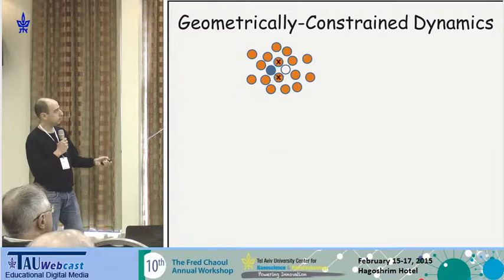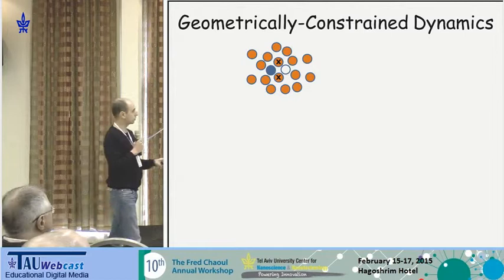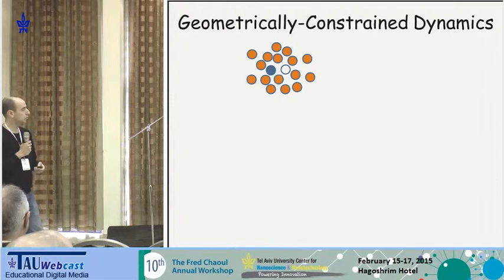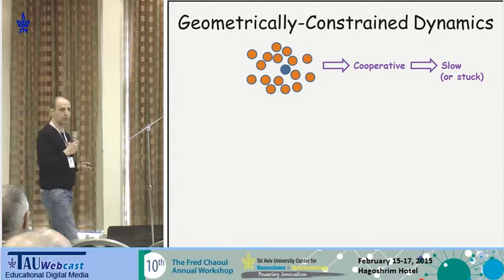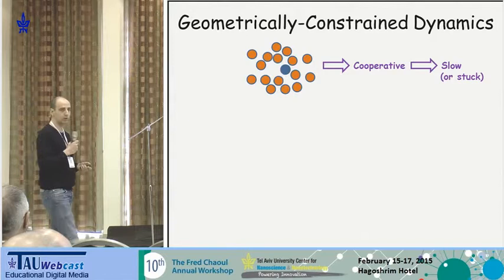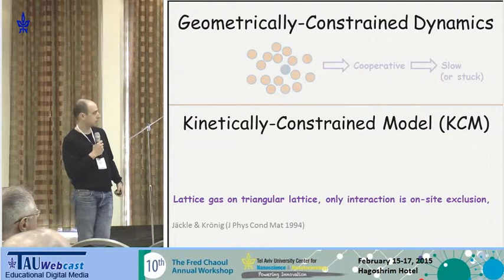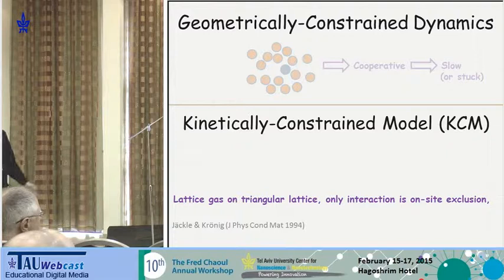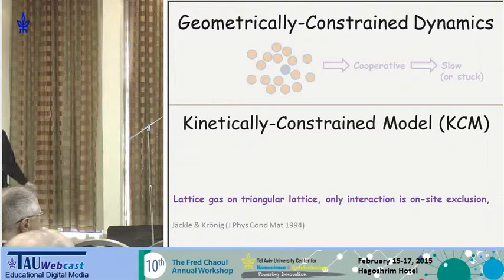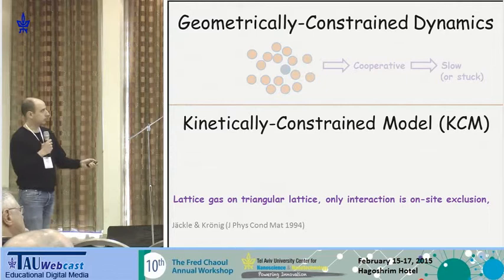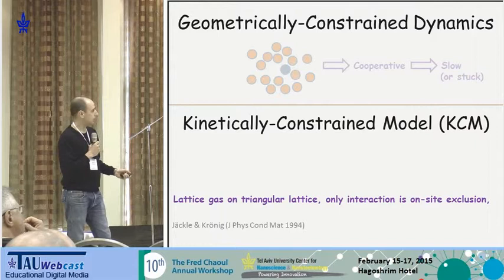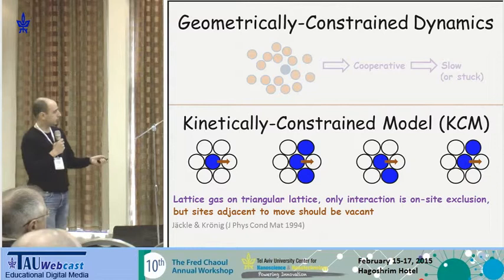The problem is even more complicated: a particle is further stuck or frustrated because the blocking particles are themselves blocked by their own neighbors. So in order for the system to rearrange, you need to wait for those particles to move, and therefore you get something very slow or sometimes entirely stuck due to a cooperative effect — and this is what gives rise to this phase transition.